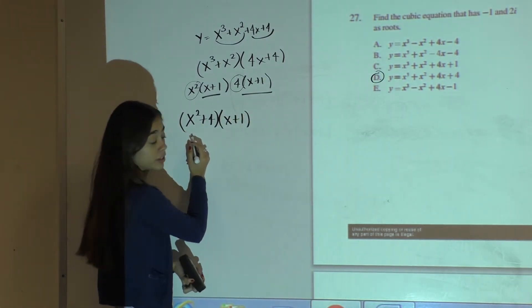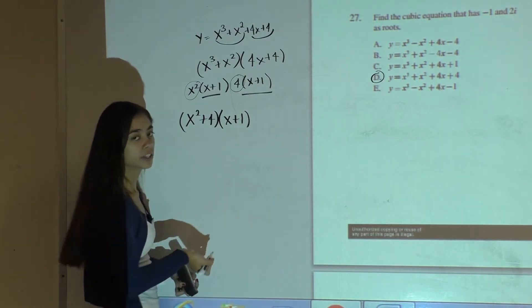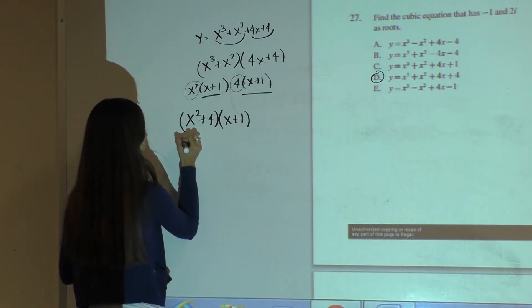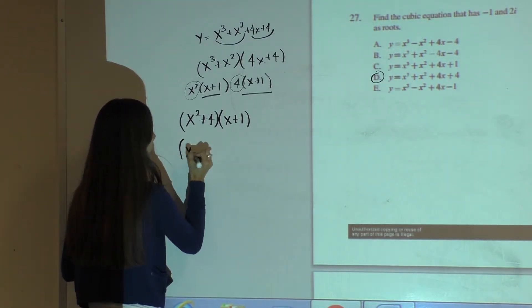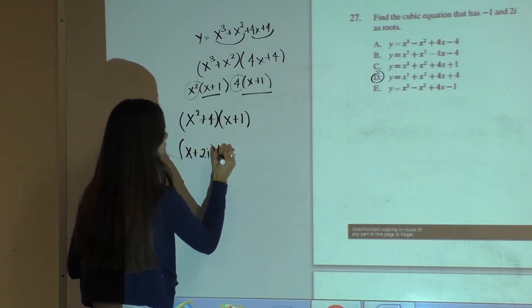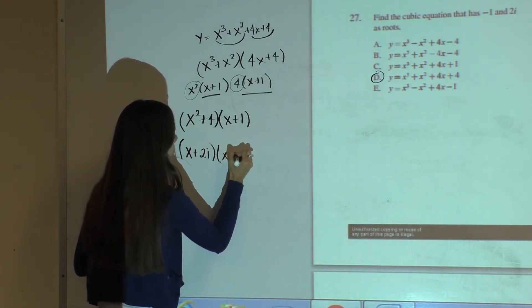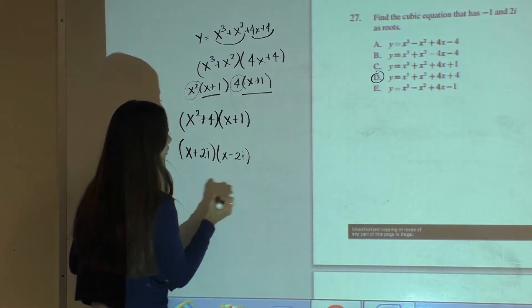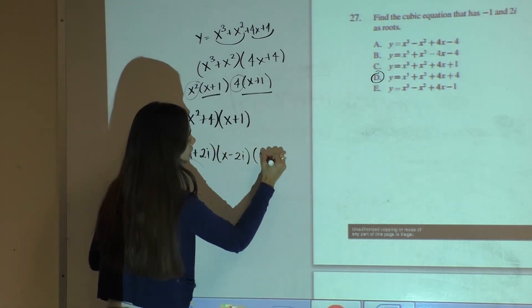Now this is a sum of squares, so the way to factor it out is using imaginary numbers. So you would have x plus 2i times x minus 2i, and then you bring down your x plus 1.